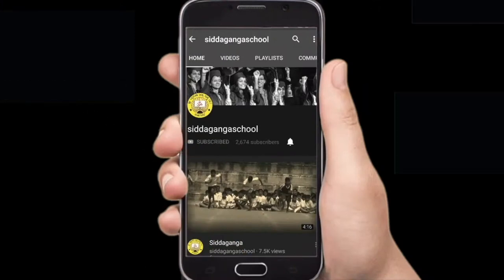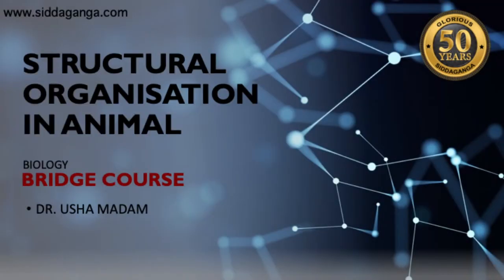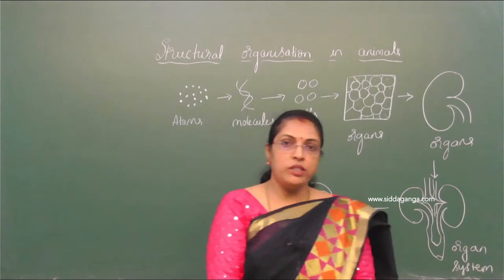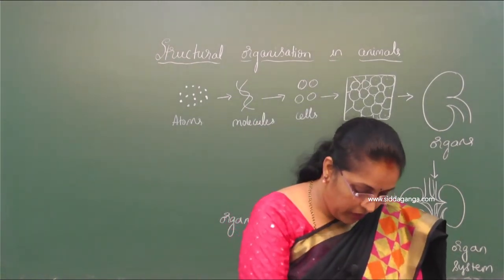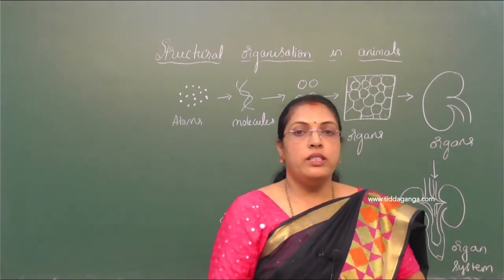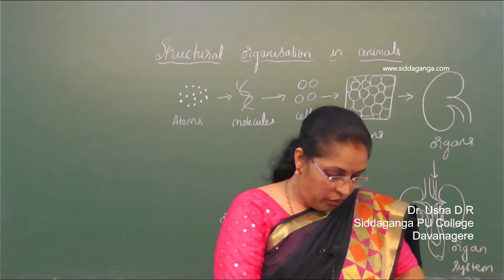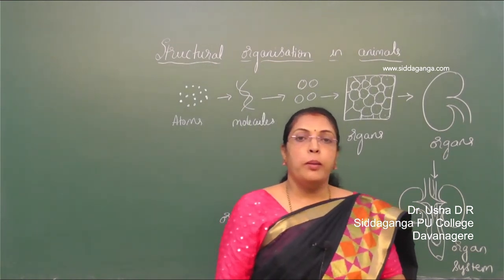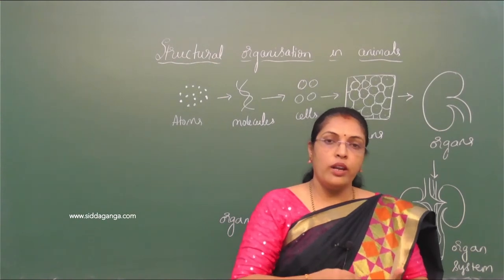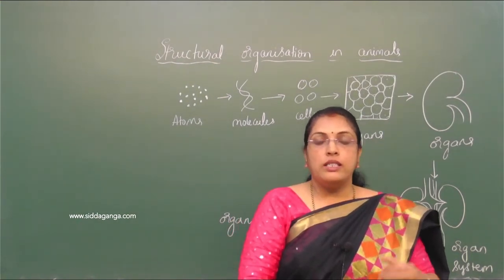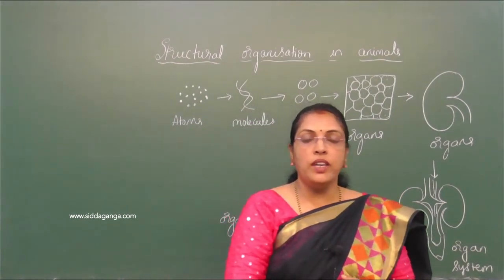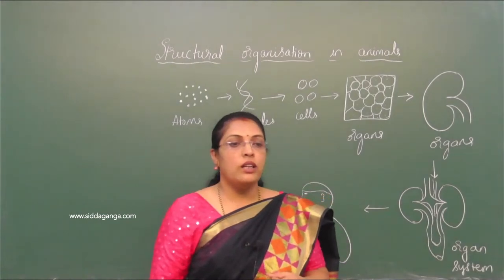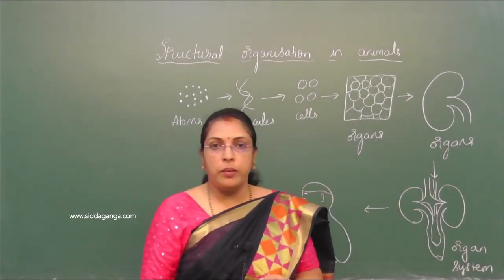Namaste children. In our last class we discussed plant tissues. In this class we will discuss animal tissues. We all know that in unicellular organisms a single cell will do all different functions, but in multicellular organisms, as the organism size increases, there is a need for different organs with specific functions.